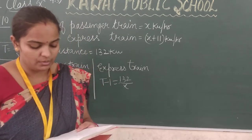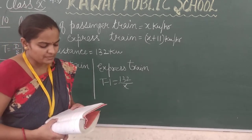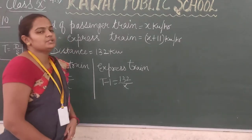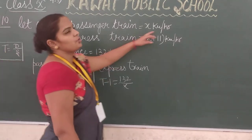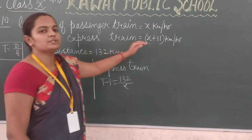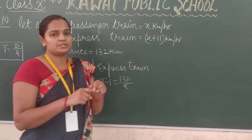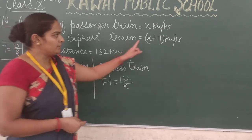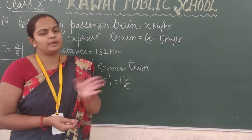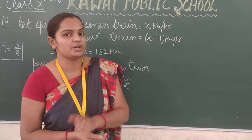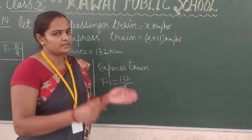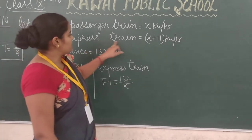We have to find out the average speed of both trains. So first of all, let's suppose the speed of the passenger train is x km per hour. For example, if the passenger train is 5 km per hour, the express train would be 6 km per hour — that's 5 plus 6 equals 11 km per hour. So the express train's speed is x plus 11 km per hour.